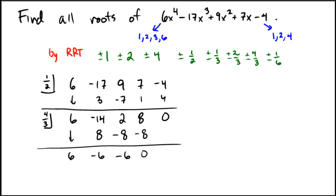Okay, so that means that the 1 half here and the 4 thirds here give us that this polynomial would factor into x minus 1 half, x minus 4 thirds. And then the residual left over here, which would be a 6x squared minus 6x minus 6.